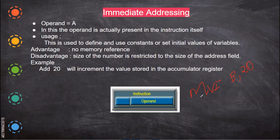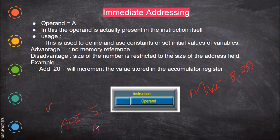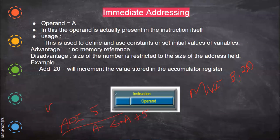The data is present in the instruction itself, so this is called immediate addressing. It can be indicated by the letter 'I' in the instruction mnemonic — for example, MVI. Whenever there is an 'I' in the instruction, it indicates immediate addressing. For example, ADI 5 means add the content of the accumulator with 5. After execution, 5 is added with the content of the accumulator and the result is stored back in the accumulator.